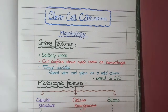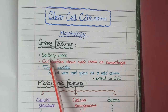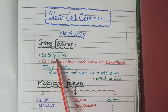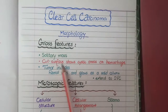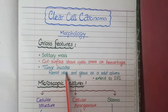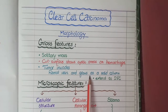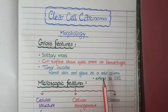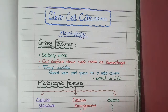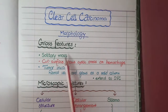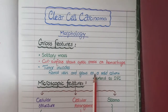On gross specimen, clear cell carcinoma appears as a solitary mass. The cut surface of the tumor shows cystic areas or hemorrhage. This tumor has a classical tendency to invade the renal veins, where it grows as a solid column of cells extending from the renal vein into the inferior vena cava in a serpentine fashion.